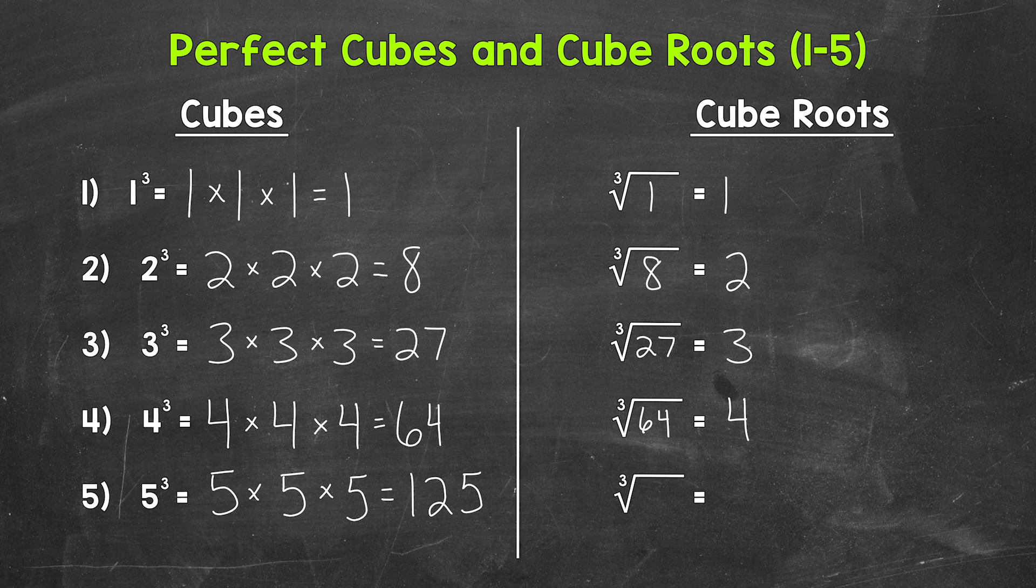That means that the cube root of one hundred twenty-five equals five. So there you have it. There are the first five perfect cubes and cube roots.